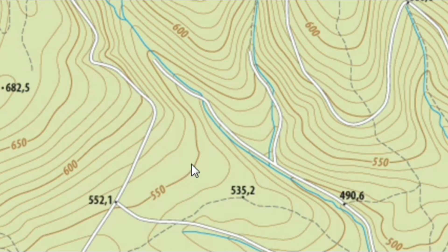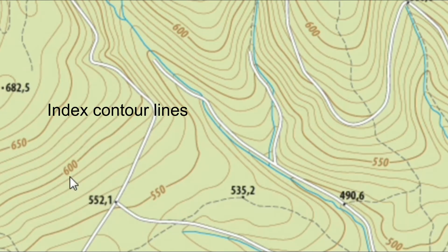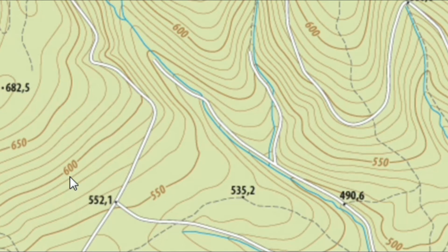What many of you have probably noticed is that we have these thick, darker lines and then the thin, lighter colored lines. You might ask yourself why that is the case — why don't all the lines look the same? These thicker lines are called index contour lines. You might ask yourself why they don't simply put a number for each line. The answer is because if we had numbers all over the place, it would be too busy and even confusing. So that's why only certain lines — these index contour lines — have numbers.